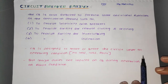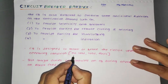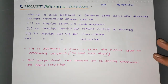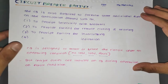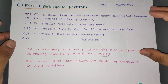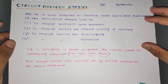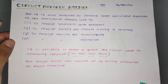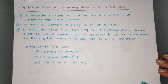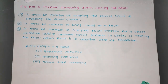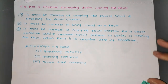The circuit breaker is designed to make or break the circuit under all operating conditions — no load, load, and fault conditions. But major duties are imposed on the circuit breaker during operation under fault conditions, whenever there is a fault in the power system or on a transmission line.